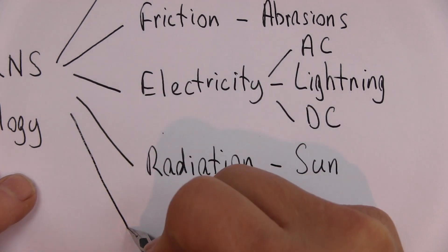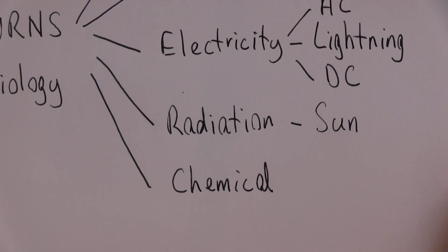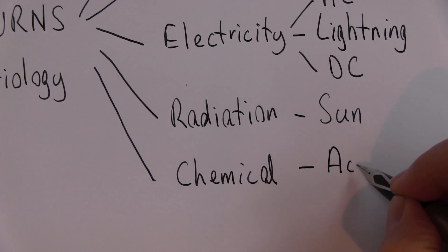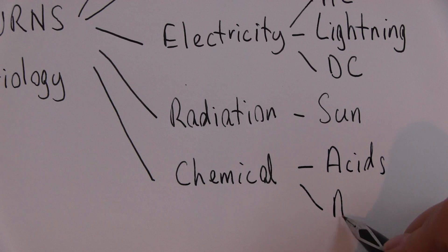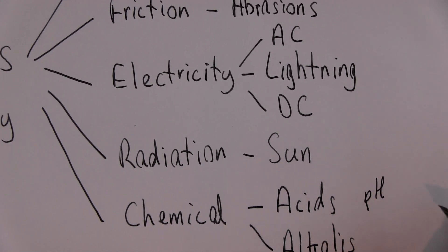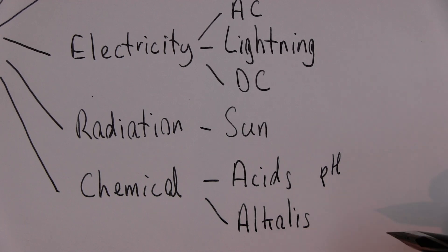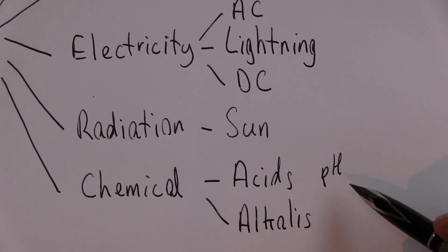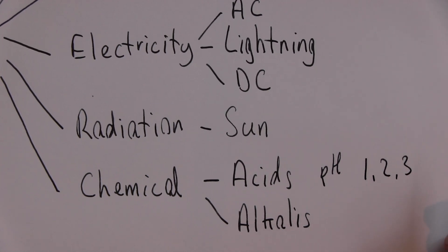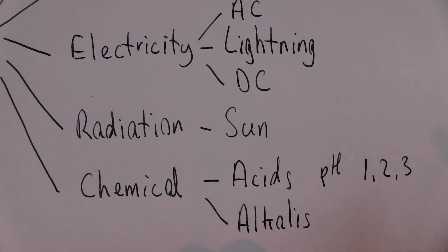The other kind of burns we talk about are chemical burns. Chemical burns are more common in less economically developed countries. They can be caused by acids and also by alkalis. Acids have a low pH — technically 1 to 7, but a pH of 1, 2, or 3 can cause injury. Any acid can cause injury if it is in contact with the skin for longer durations.